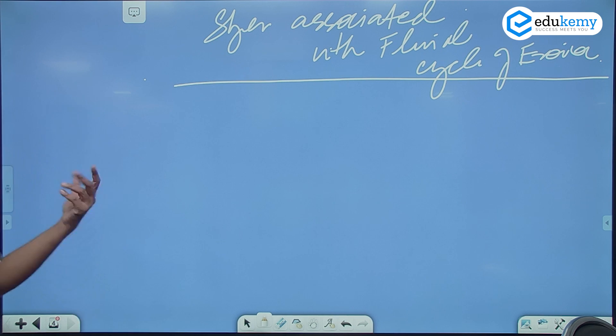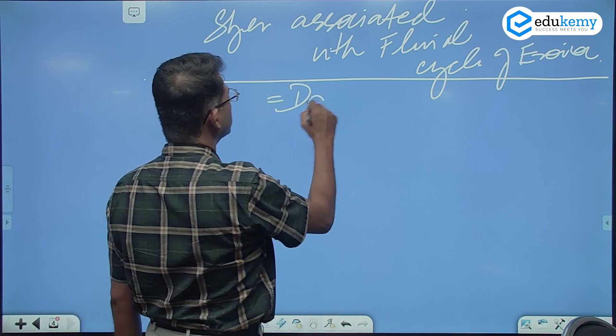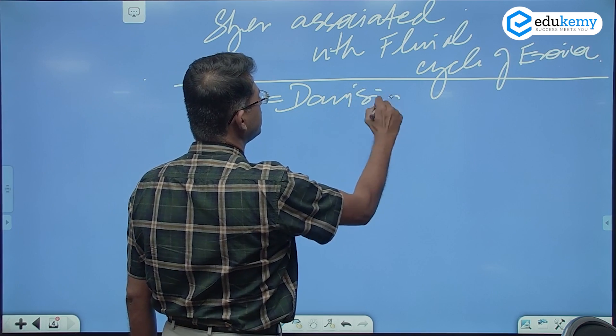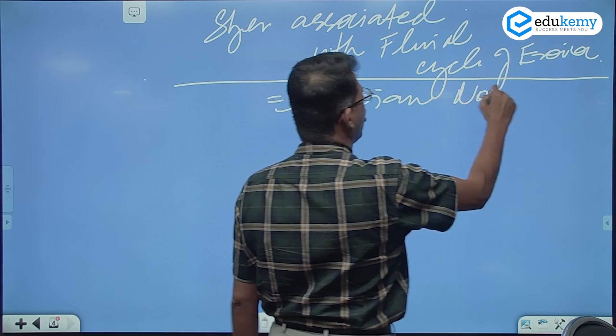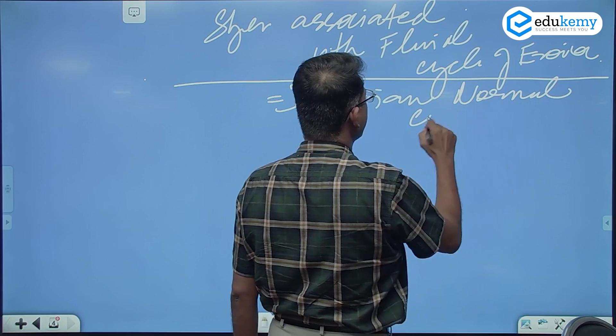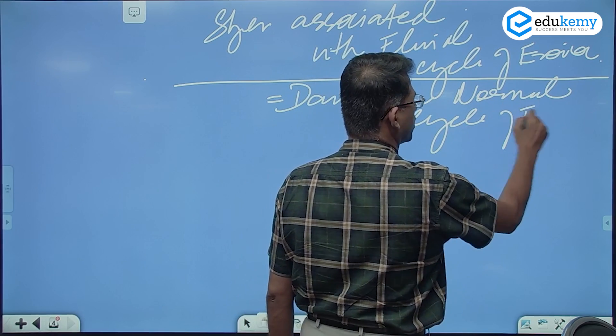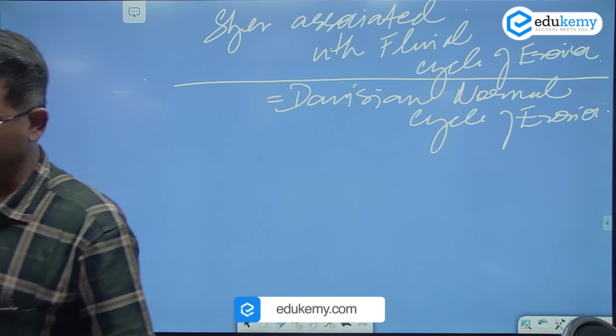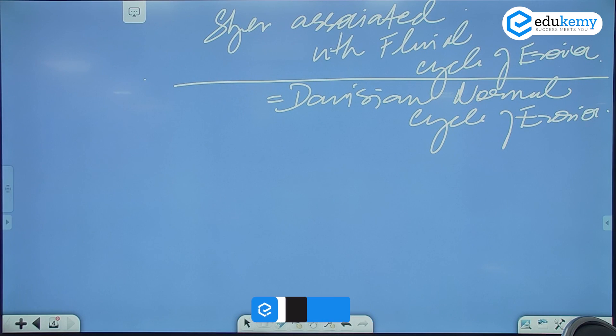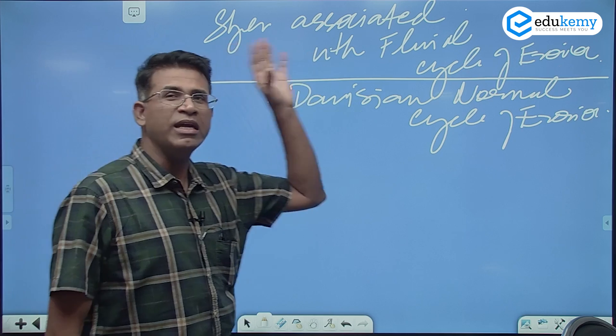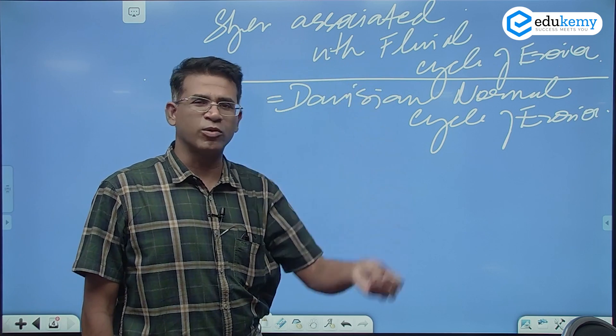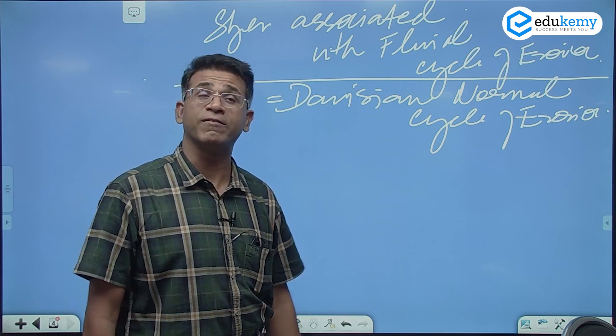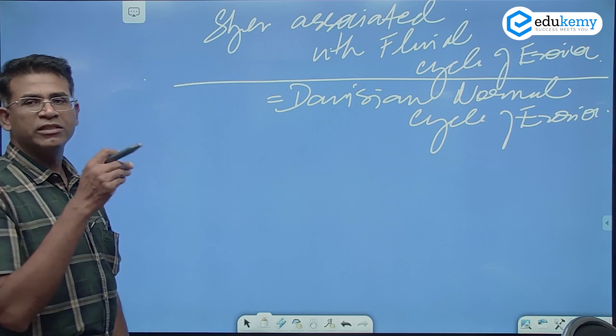And this is also referred to as the Davisian, is also called as the Davisian normal cycle of erosion. Same things, they both mean the same things. So this is a very descriptive part. There are some features, just know that, and of course some discussions we will have.